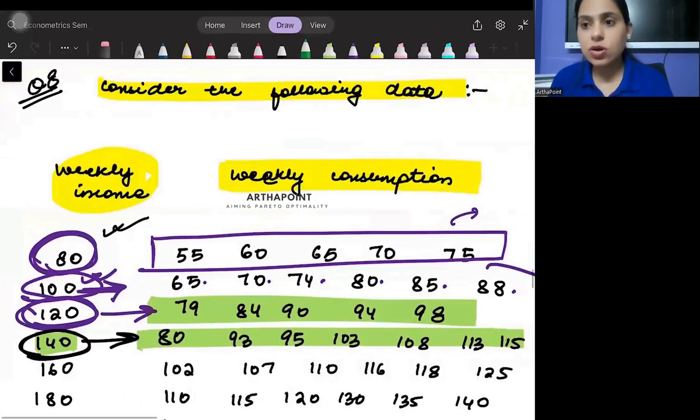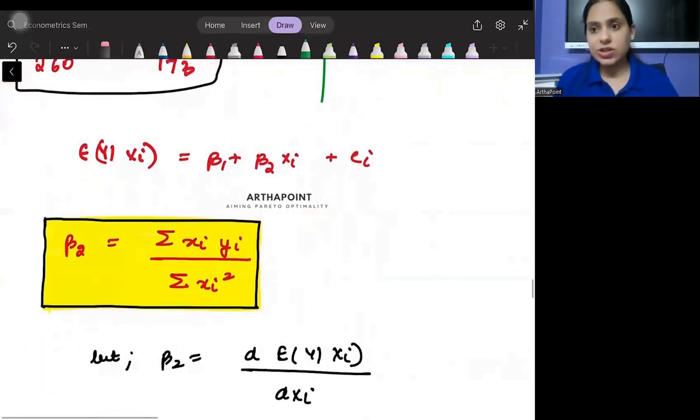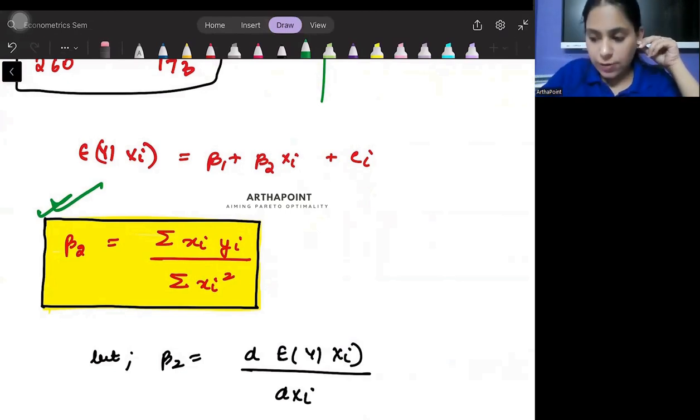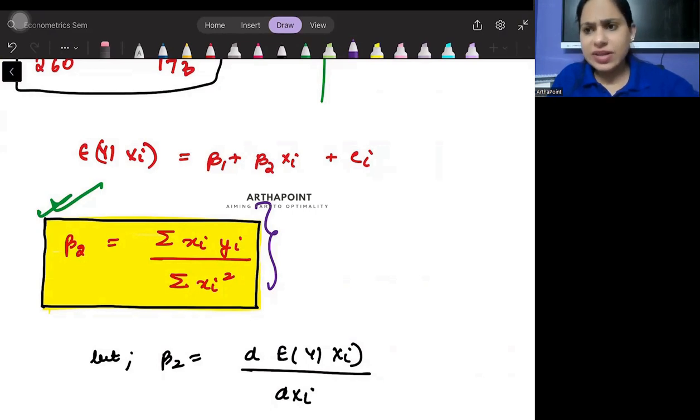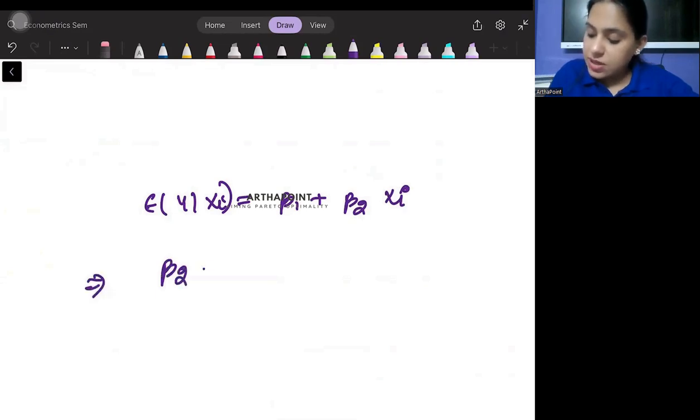Then it may ask you to find out the regression line. Here is what is important: you find out this entire process. We have this formula, summation xi yi divided by summation xi square. You put down this formula, you will get the answer. The other and easier process is that if you look at your value, e of y given xi equals beta 1 plus beta 2 xi. We know from here that beta 2 is d of e of y given xi by d of xi.